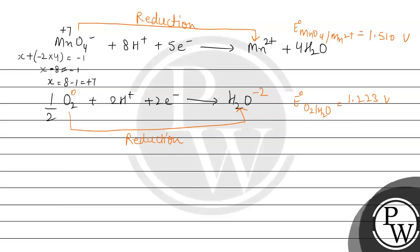And dono hi reaction mein reduction ho raha hai. Now the point is anode pe kaunsa reaction hoga aur cathode pe kaunsa reaction hoga. And anode pe kaunsa reaction jayega, that will be this one jo oxygen wali hai, because jo standard reduction potential hai, that is less for this. Due to which is per oxidation ho jayega. And we can say this will go on the anode. And this reaction will be at cathode.